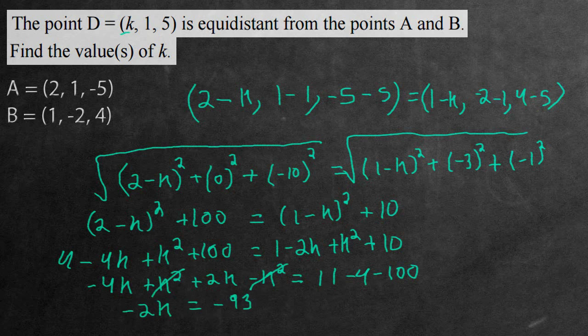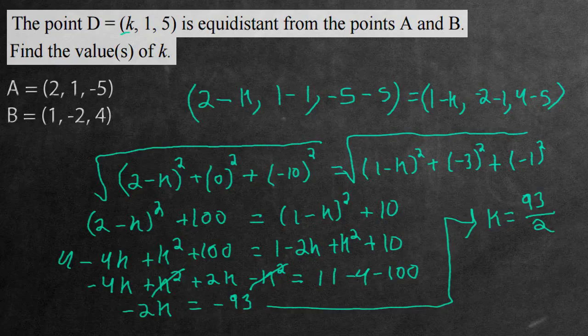Now if we divide both sides by negative 2, we can isolate K. That's going to be K equals, the negatives cancel out, so 93 over 2. And that is the value of K. Thank you for watching. If you have any questions, feel free to ask me in the comments section below. And as usual, I hope you're having a fantastic day.